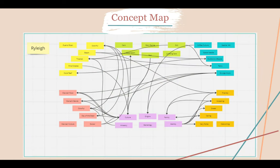Through this, I took concepts that connected to her and brainstormed as many associations as possible and connected those associations together to see what concept seems to represent my persona the most effectively. Through this, I found Puerto Rican and Mexican culture and welcoming were the most effective.